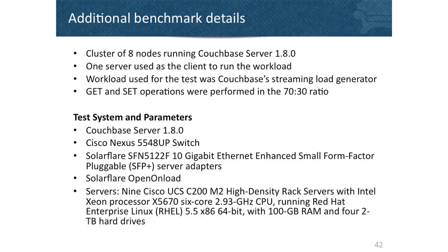Some details from that benchmark: it was on 1.8, but 2.0 has the same characteristics. One client server was used. The server hardware was essentially an off-the-shelf pizza box server from Cisco with a reasonable CPU, a good amount of RAM, and nothing special. This benchmark was all about showing that Couchbase software on a network can provide that kind of performance.